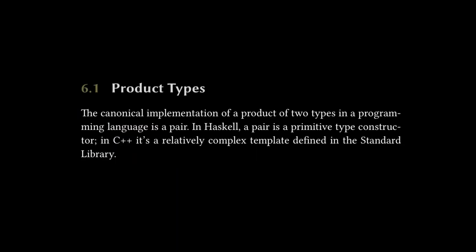The chapter starts off by saying the canonical implementation of a product of two types in a programming language is a pair. In Haskell, a pair is a primitive type constructor, and in C++, it's a relatively complex template defined in the standard library. The key thing here is that a product of two types is a pair. And specifically in C++, we use a class, or you could use a struct to implement a pair type. So implicitly here, it's referring to classes and structs from a lot of the imperative programming languages that we all know.